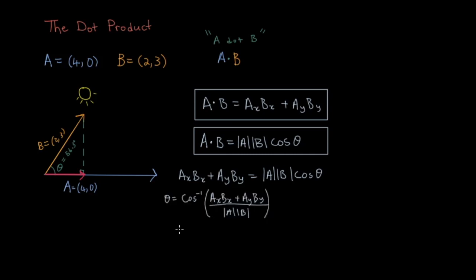Doing so in this case would give us the arc cosine of (4 times 2 plus 0 times 3) divided by (4 times root 13). As you can see, our answer is 56.3 degrees.